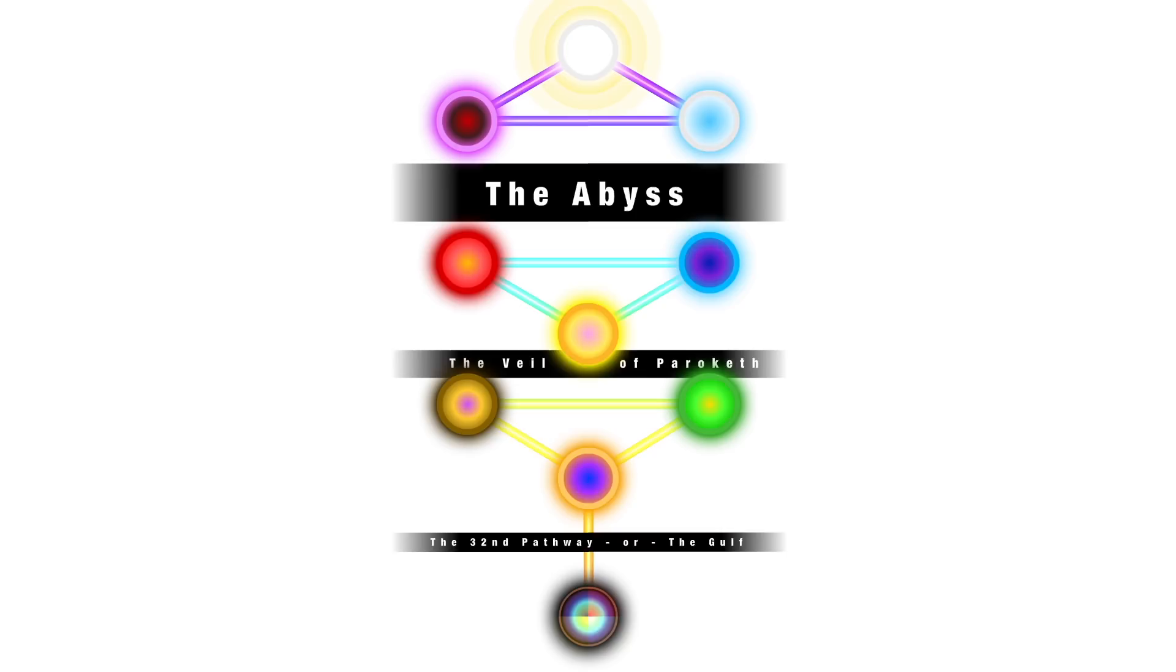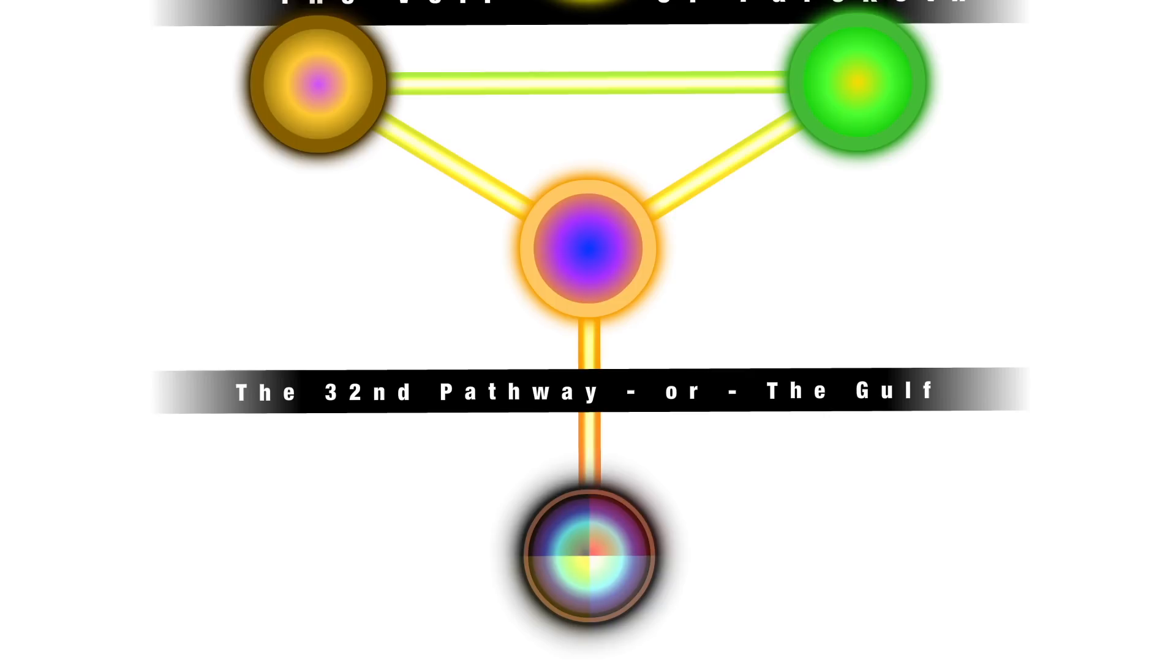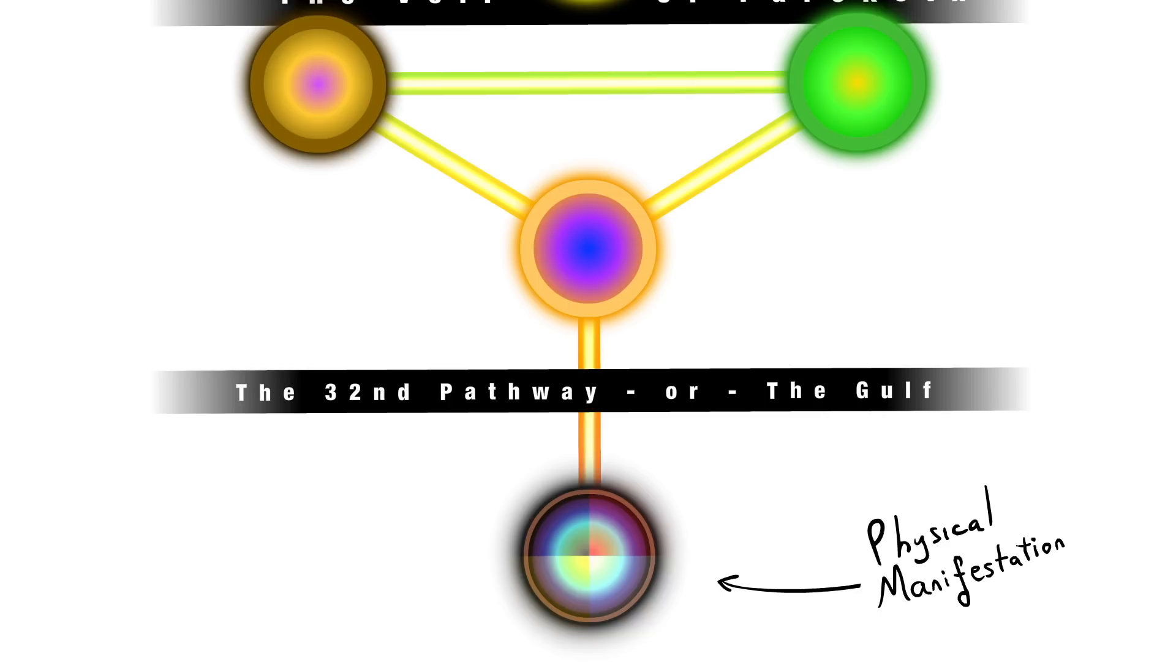There are also three major barriers within the tree, which symbolize our disconnection with nature and then how we can transcend them. The first barrier is called the 32nd pathway or simply called the Gulf and is the connection between the physically manifested realm and the ether. Crossing this barrier is the realization that we are more than our physical bodies.